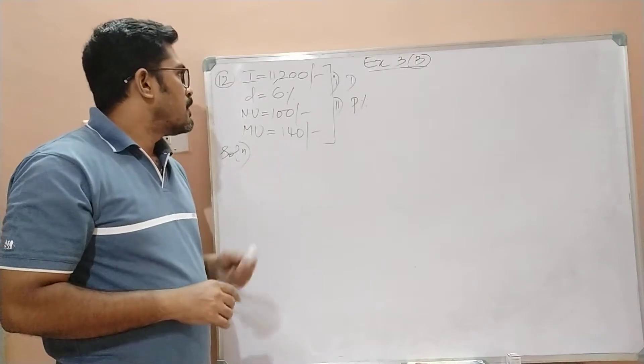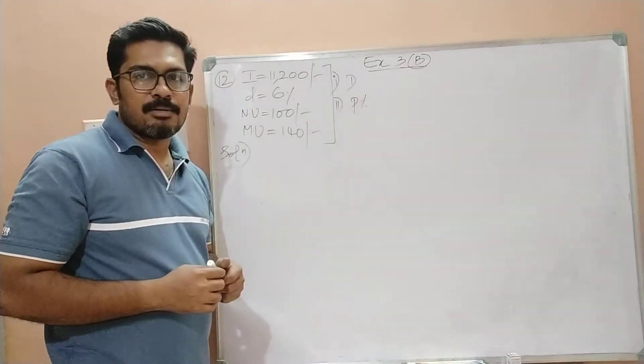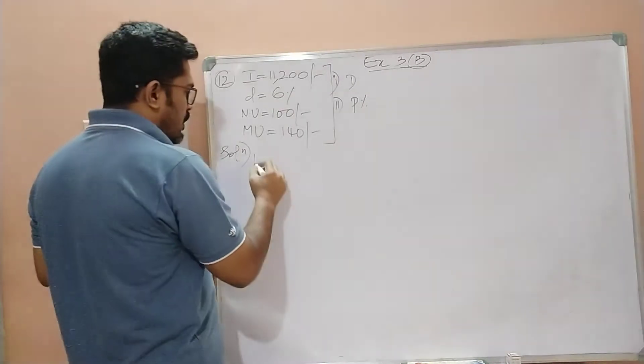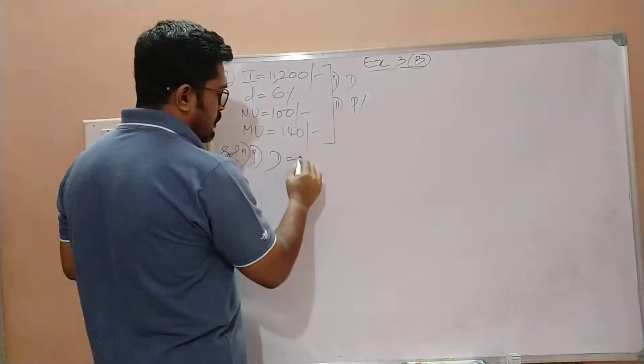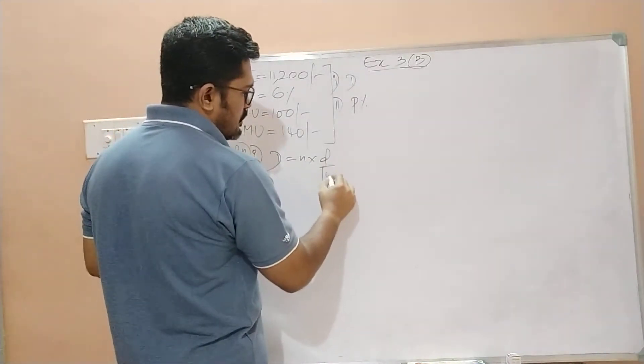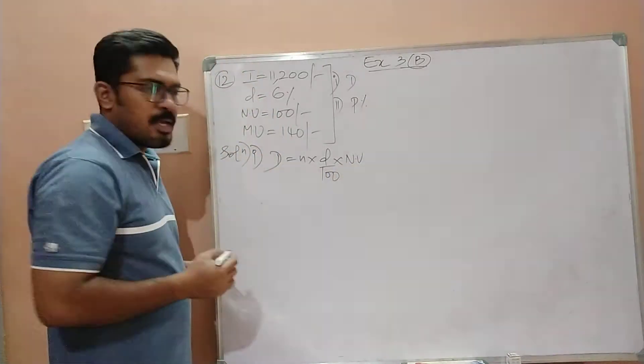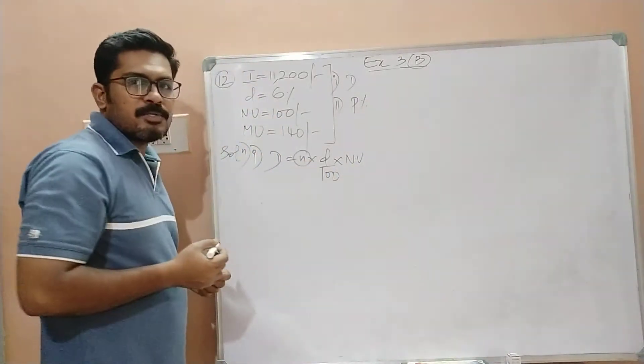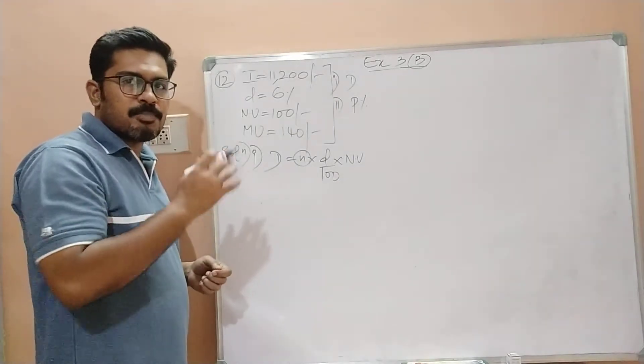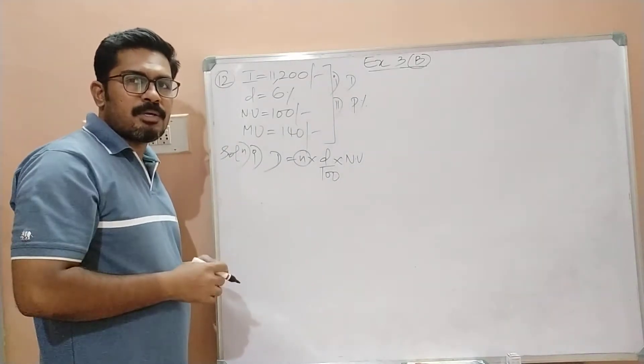Then you have to find out what is the annual dividend. You know the formula to find the annual dividend is N into D by 100 into its nominal value. Have they mentioned what is the number of shares that he is purchasing from this company? No.